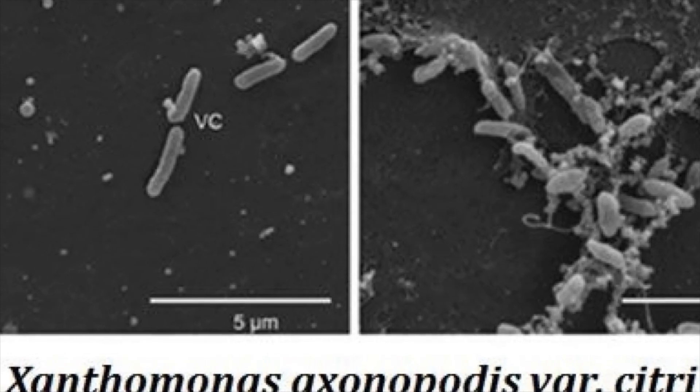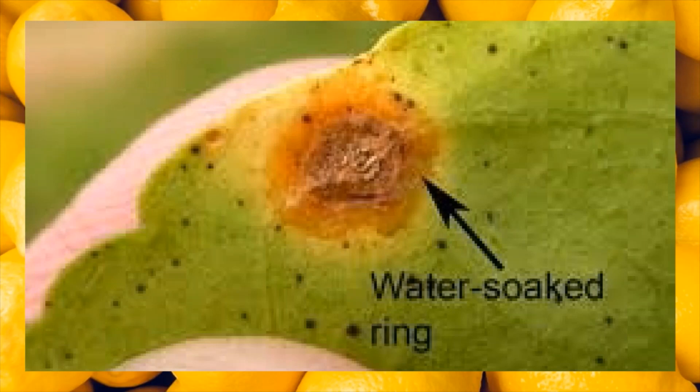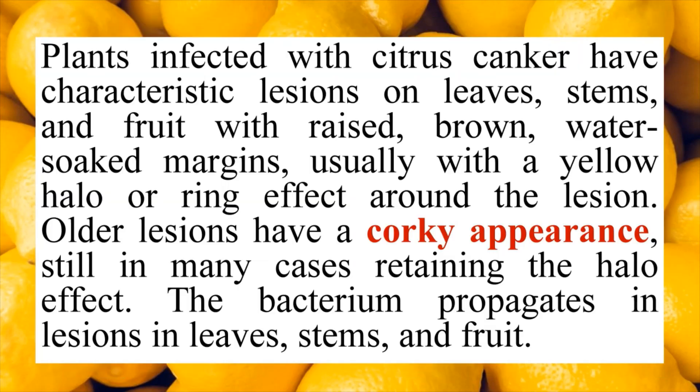Plants affected with citrus canker have characteristic lesions — that is, wounds on leaves, stems, and fruits — which are slightly raised above the normal level, brown in color, and water-soaked, usually with a yellow halo margin. Older lesions become khaki in color, hard, and still show the halo effect around them. The bacterium propagates in lesions of the leaves, stems, and fruits.